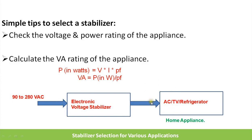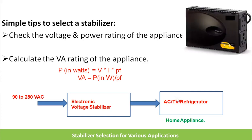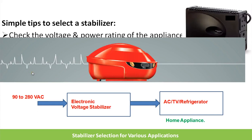Here you can see a stabilizer connected to a home appliance. The stabilizer output is a stabilized voltage, but it is not perfectly constant — it has a range. For example, at 90V input there is a corresponding 200V output, and at 280V input there is a 250V output. This output range is acceptable to your appliance and will not damage it. The graphical representation shows fluctuations at the input and a clean voltage at the output of the stabilizer.